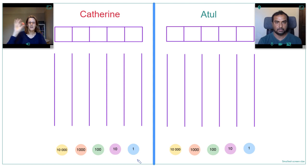We use a 10-sided dice and the aim is to make the largest number possible. When you roll the dice and get a digit, you choose which box to put it in, but it cannot move from that box once it's placed. Let's have a go at playing. Atul, why don't you start?